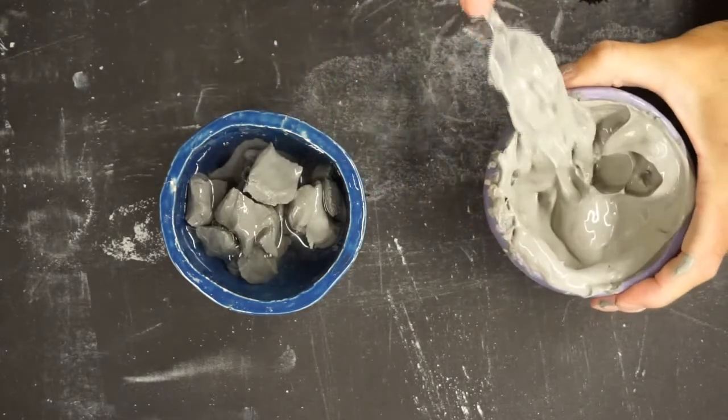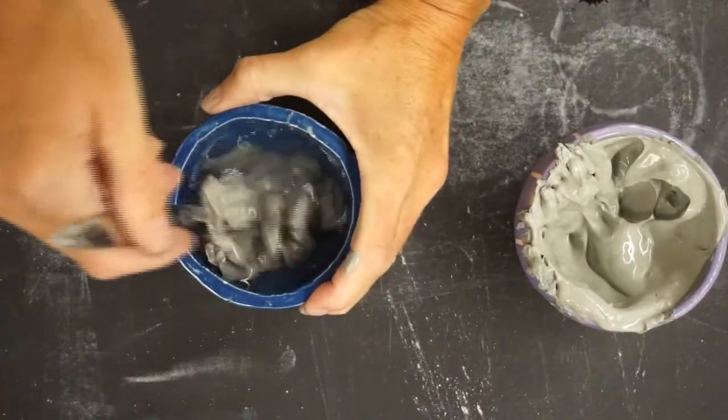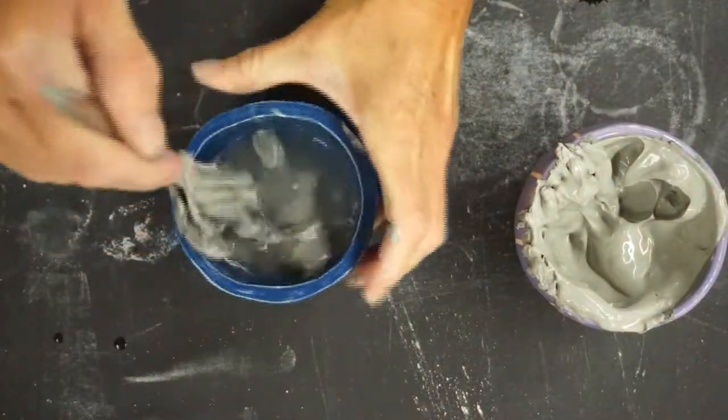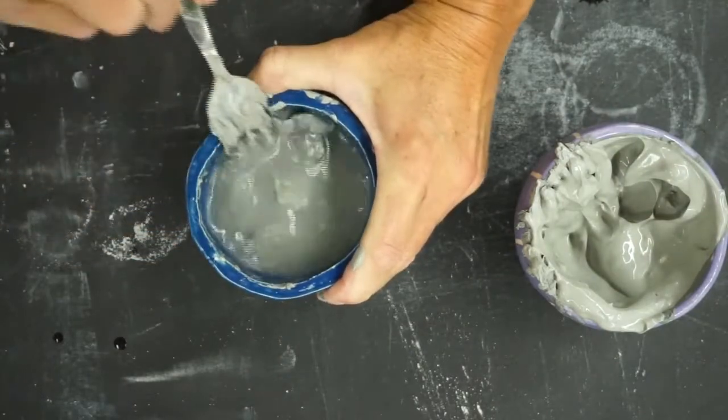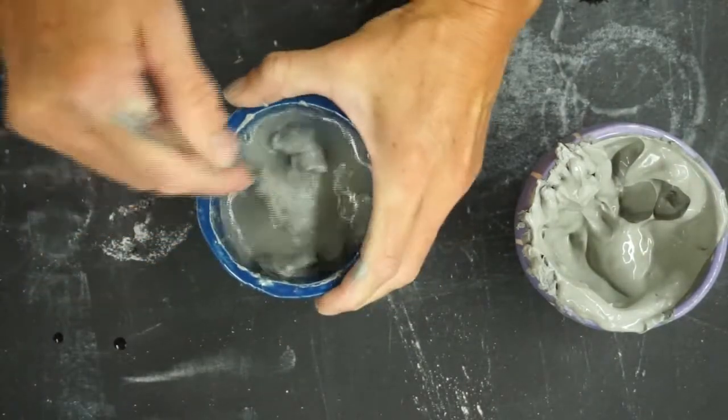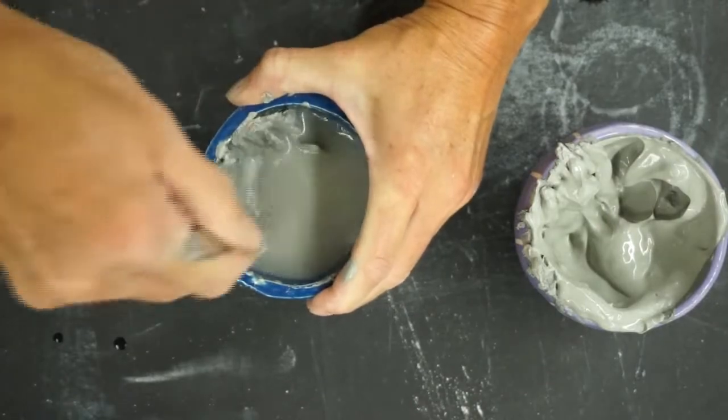And then you'll take your fork and you'll just kind of start smashing this up in the water until you get kind of a mix, a pancake mix substance. So you want it to kind of feel like batter.